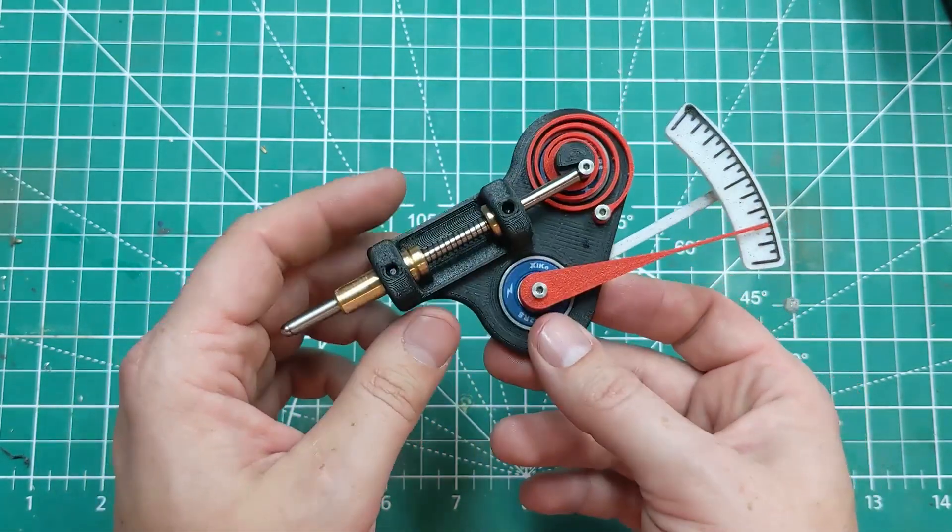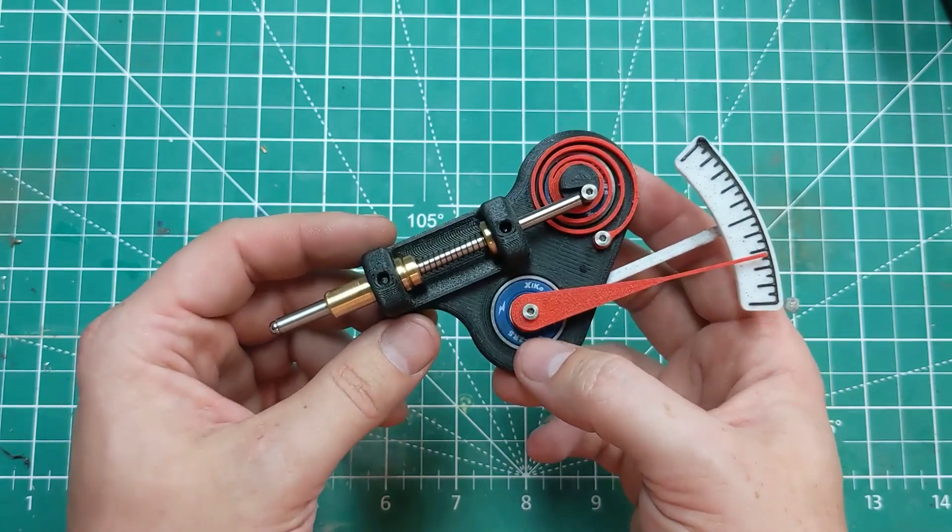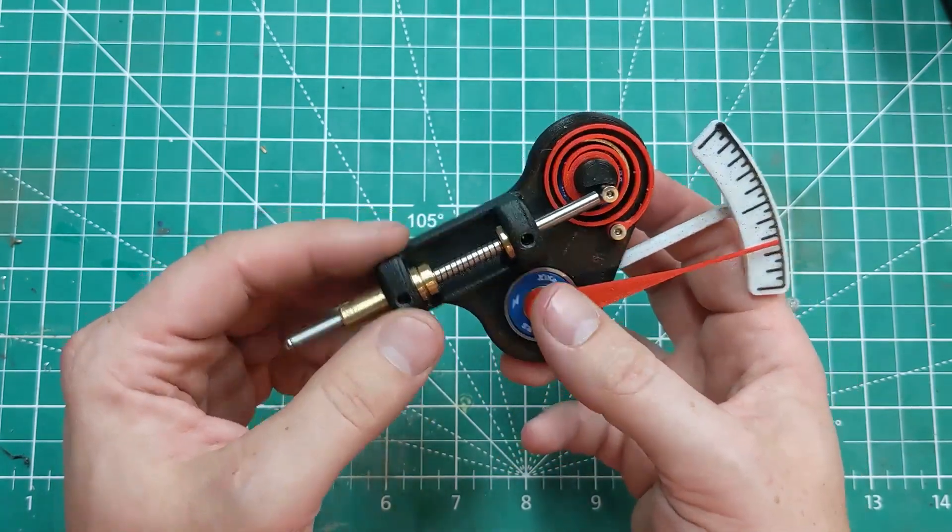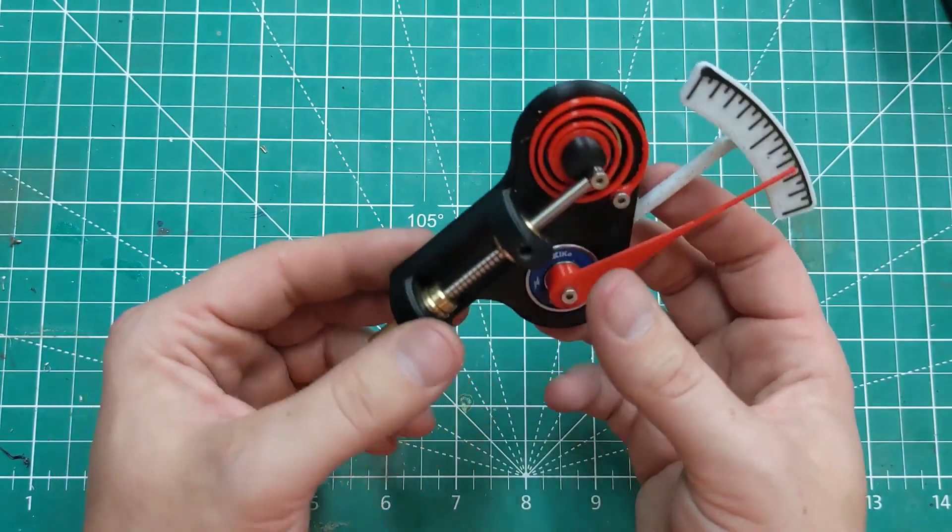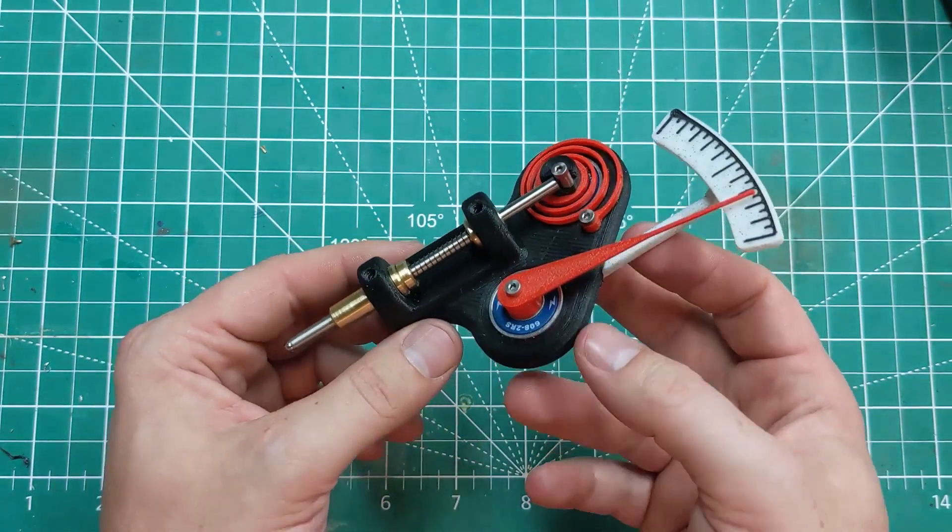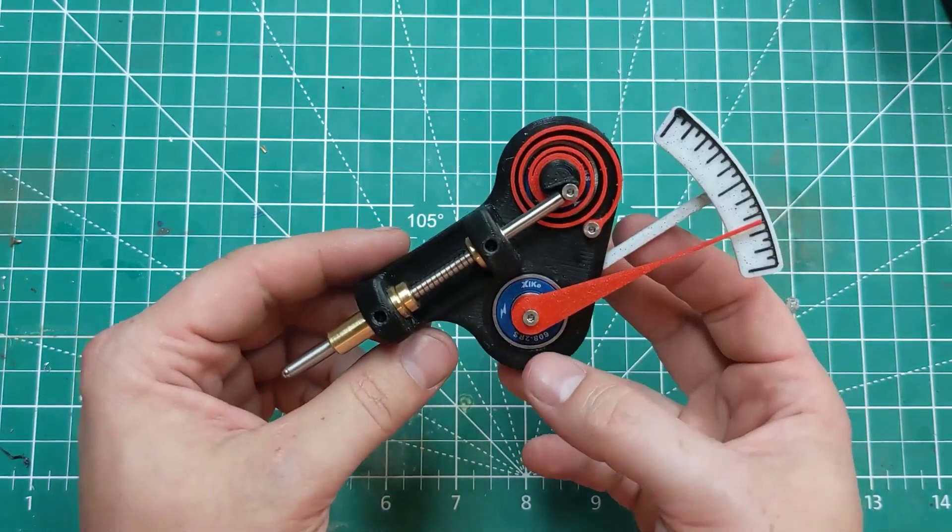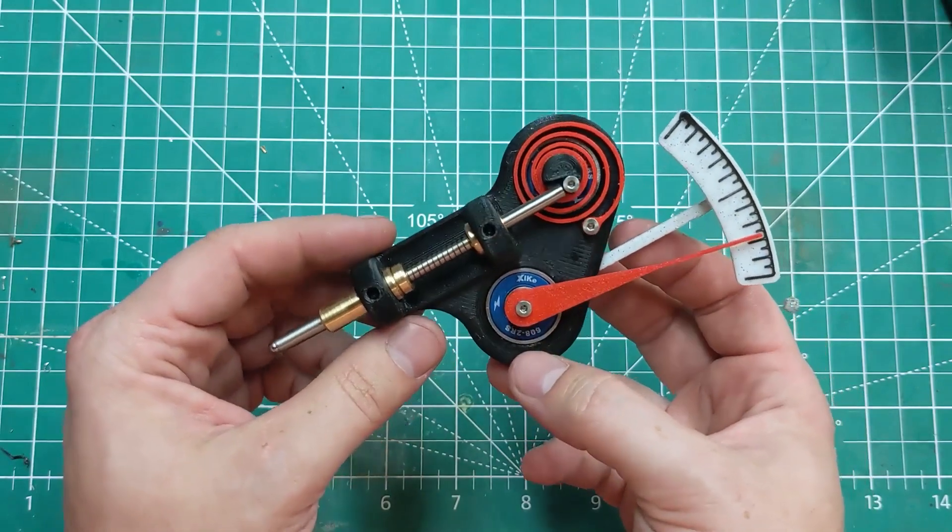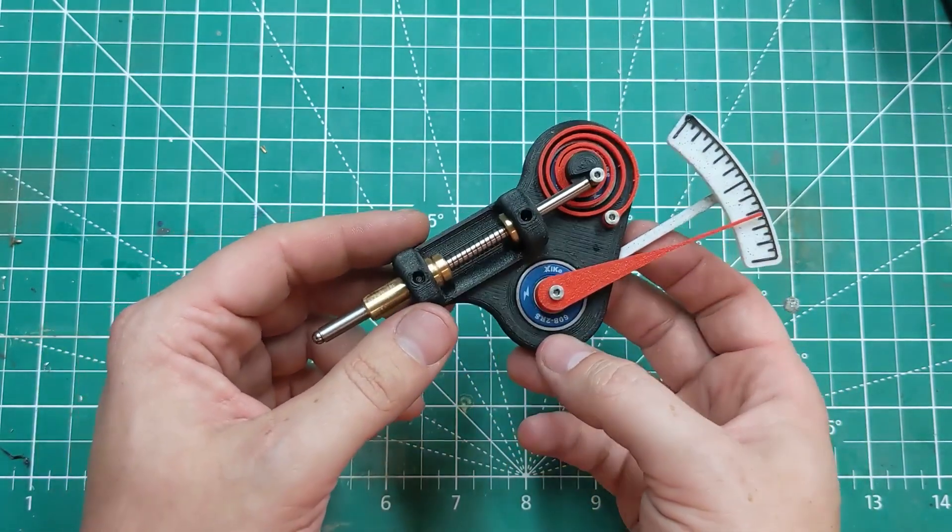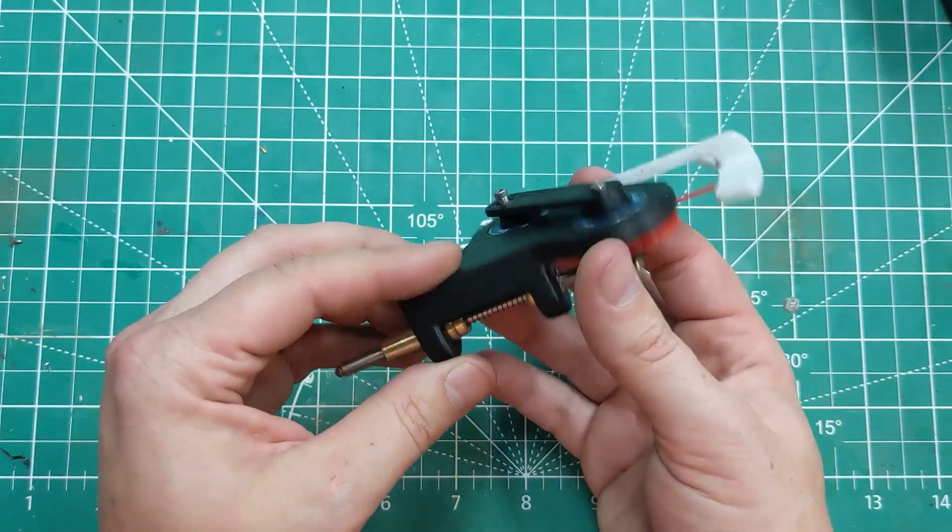Beyond that, I did dump the regular PLA and I printed all the structural components out of a carbon fiber reinforced PETG. As far as I know, it's about the baddest ass stuff you can print on a relatively stock Ender 3. I'll link that down in the description.